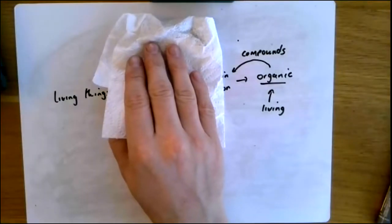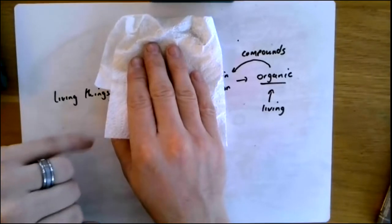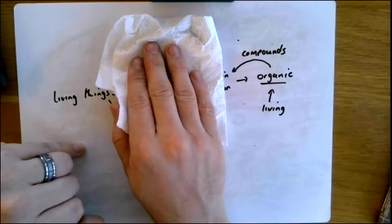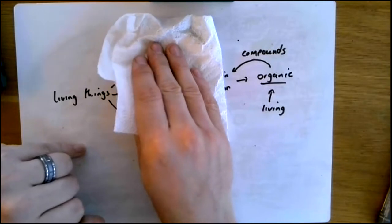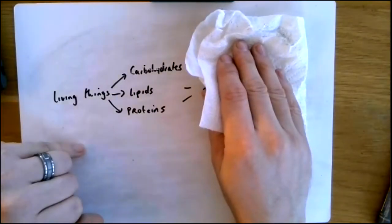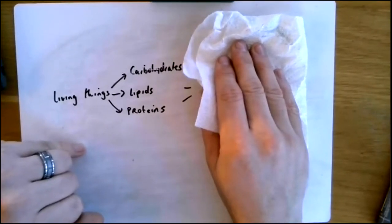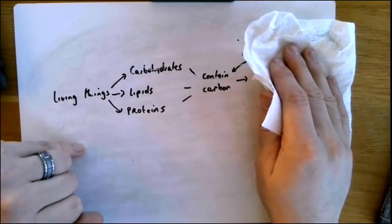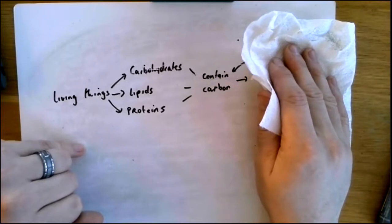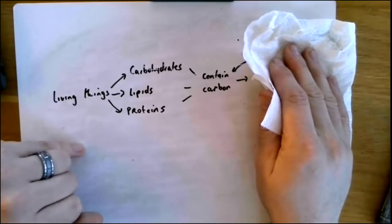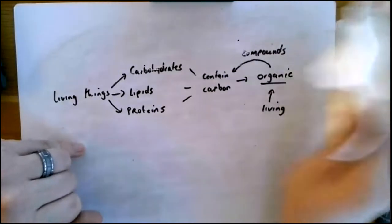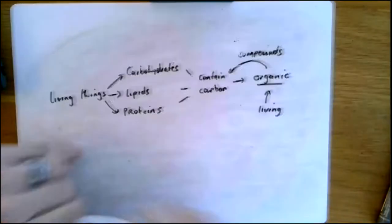Just a couple of quick questions to recap. Living things are made up of three main macromolecules — speak their names now please. I'm hoping you said carbohydrates, lipids, and proteins. They all contain atoms of a particular element — I'm hoping you said carbon. And because all living things contain carbon, the special word that describes the study of these molecules is organic, which means living. The modern definition of organic is the study of compounds which contain carbon.